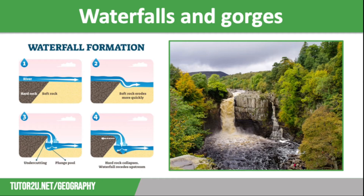Waterfalls form when water falls down a vertical drop in the river channel. Rocks are laid horizontally, but a drop will form where there is a gap between hard rock capping upstream and the softer rock downstream. Differential resistance means that the soft rock will erode much quicker, and the water will fall down to the soft rock from the hard rock above. You can see that on the screen in stages one and two.